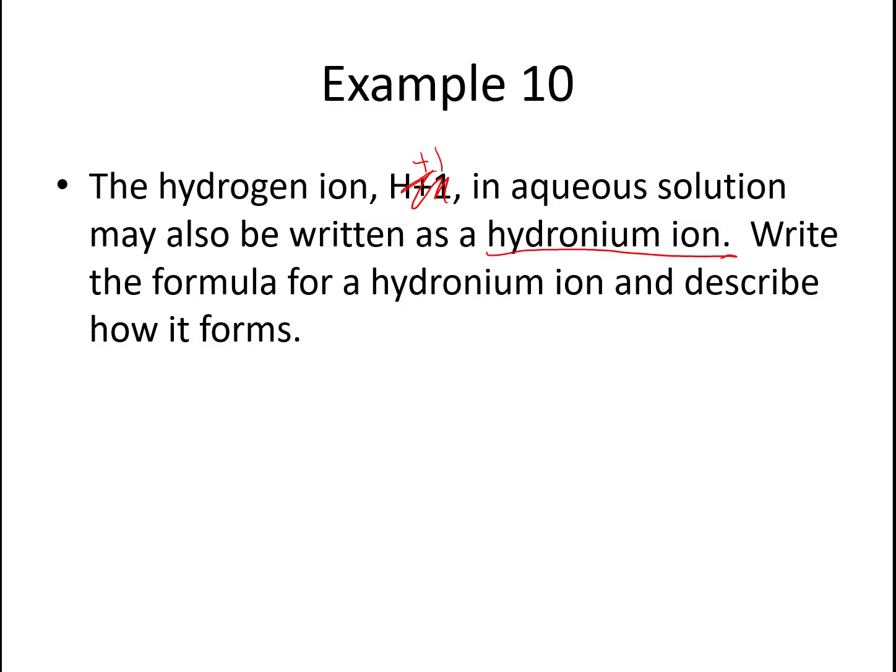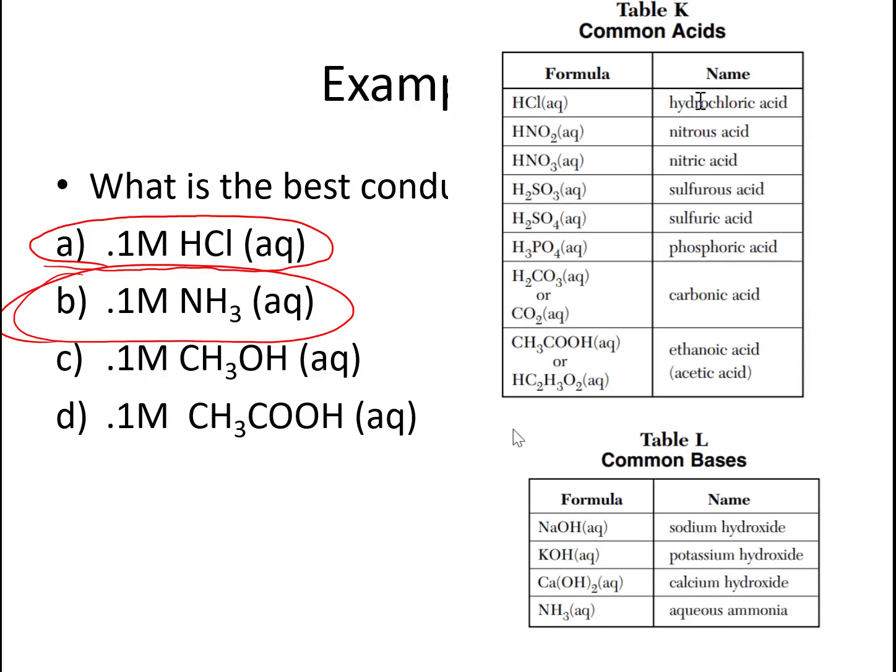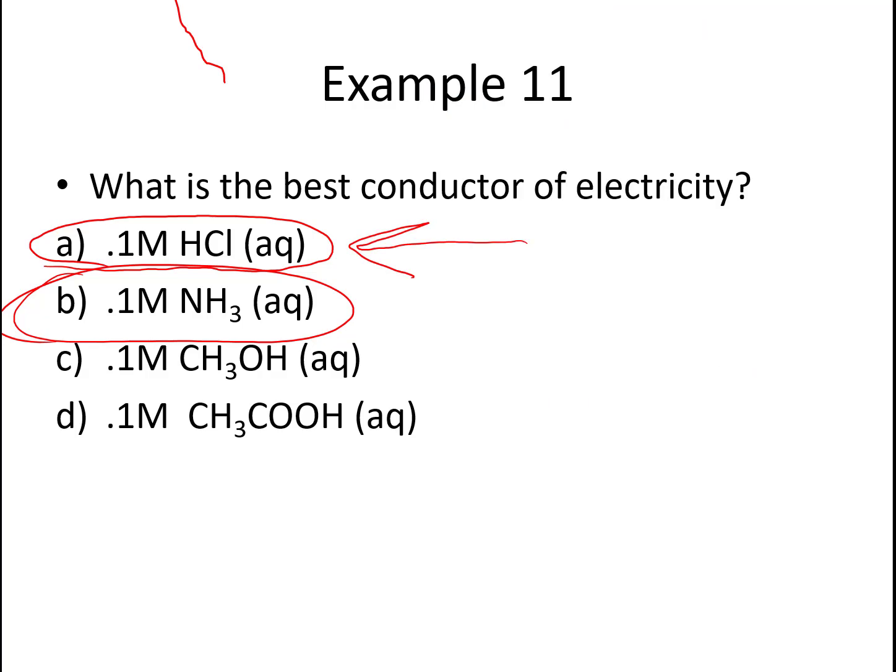Let's look at example 11. Which one of these would be the best conductor of electricity? Well, if we're looking for a good conductor of electricity, we're looking for something with mobile ions. We've got hydrochloric acid here as our best answer. You might wonder, well, we've got a base here too. How come the base isn't the answer? It has to do with the strength of the acids versus the strength of the base. If you look at table K and table L, remember acids start strong at the top and end weaker at the bottom. Same thing is true for bases. Hydrochloric acid is a stronger acid than ammonia is a base, because it dissociates better. That's why it is our best answer.